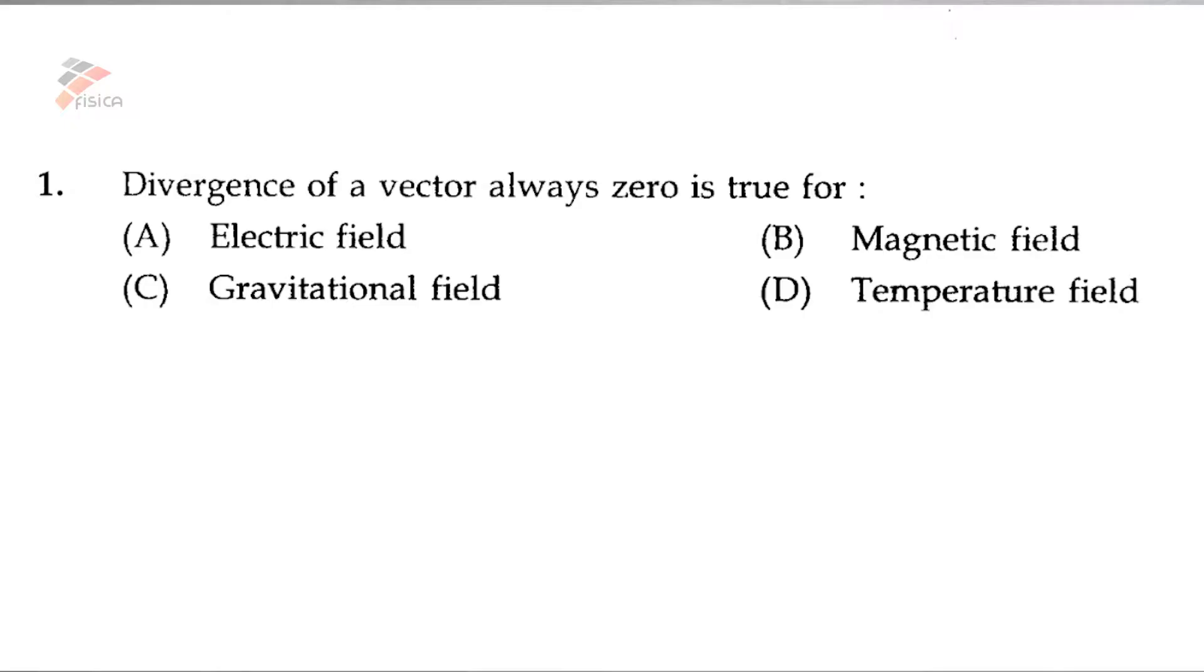The first question is: divergence of a vector always zero is true for option A electric field, option B magnetic field, option C gravitational field, and option D temperature field. I think you are familiar with Maxwell's four equations in general.